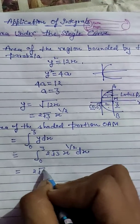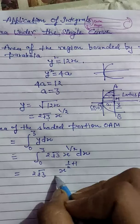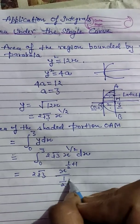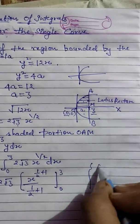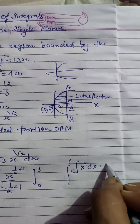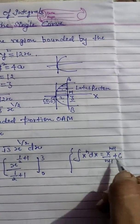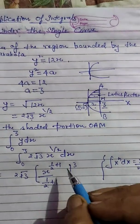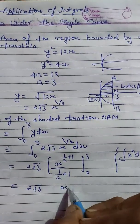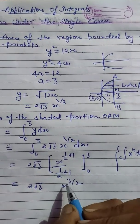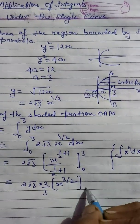From y² = 12x, taking the square root gives y = 2√3 · x^(1/2). So the integral becomes the integral from 0 to 3 of 2√3 · x^(1/2) dx. Taking 2√3 as a constant outside, and applying the power rule formula — integral of x^n dx = x^(n+1)/(n+1) — we get 2√3 · [x^(3/2) · (2/3)] evaluated from 0 to 3.